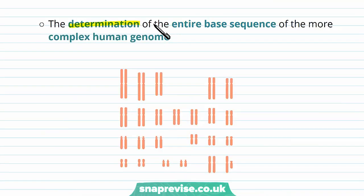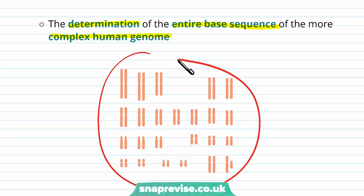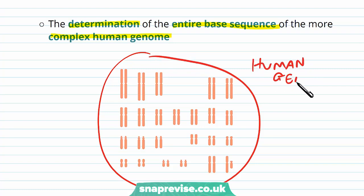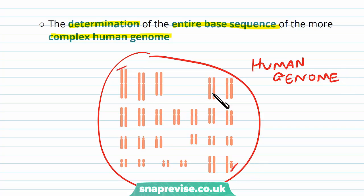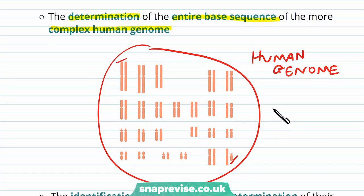It also had the aim of determination of the entire base sequence of the more complex human genome. So once they moved from the simpler organisms, they went on to doing the human genome, which is very very big and consists of lots of chromosomes. They wanted to work out from start to finish the entire order of DNA.